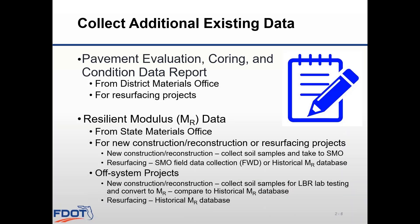Now that you've gone out and looked at your project, it's time to request more data. For resurfacing projects, you'll need to request a pavement evaluation, coring, and condition report from your district materials office. This report request will prompt the district materials office to review the existing pavement and install pavement cores throughout the project limits. This information is extremely important in the design for resurfacing as it will identify the existing layers and the condition of each of those layers.